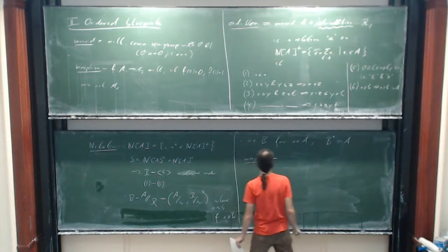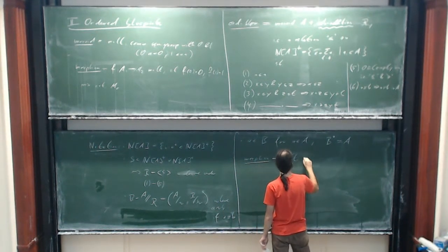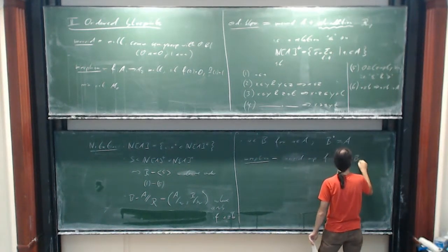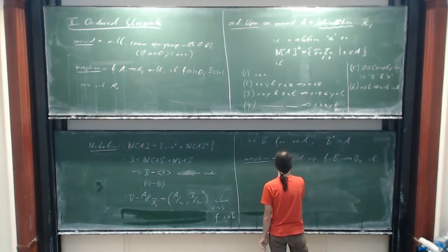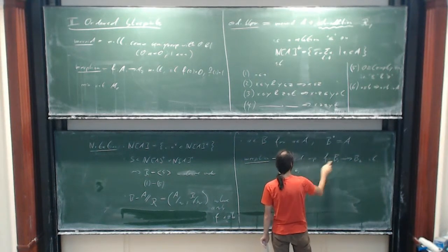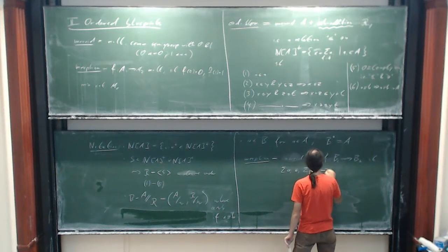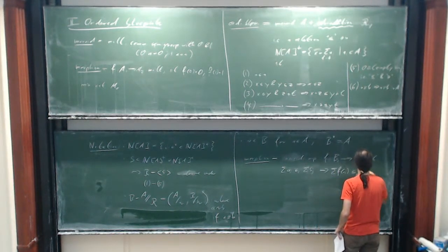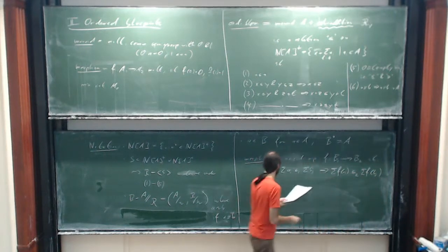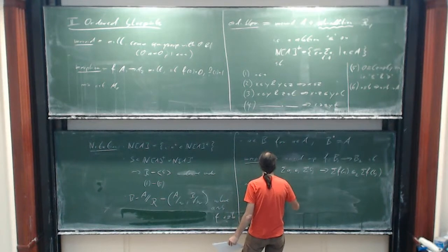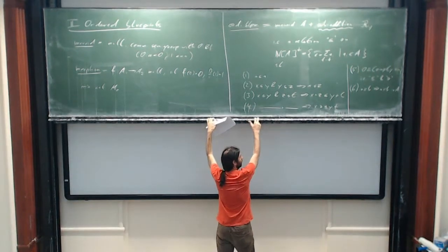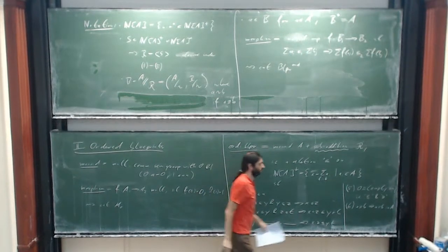I denote the ordered blueprint by B and write it as A double-slash R, because it's something like a representation where you quotient out relations. This denotes the pair of a monoid relation determined by axiom 6 together with R. Also, I identify the underlying set with the blueprint, writing A and B for elements, and B-bullet for the underlying monoid when I want to forget the sub-addition.